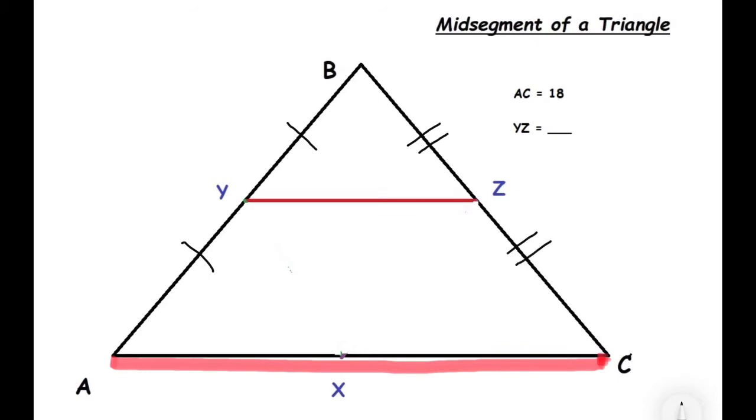Now, let's see if we can solve a problem. We said that the two red lines are parallel to each other, and YZ is going to be half the size of AC. If AC is a line segment of size 18, then that means that YZ is half of that. So our answer to YZ would be 9.